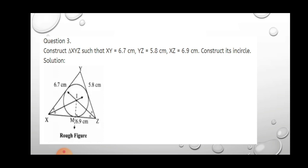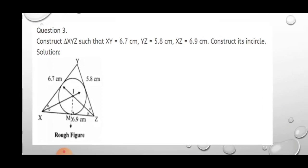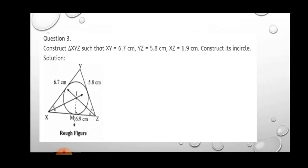On screen, a rough figure is drawn. First, decide which side is the base. Here the base XZ is 6.9 cm, so draw that with pencil and scale. To draw XY and YZ, use a compass. Draw the rough figure first — it carries one mark. Then follow the steps to construction shown on the next screen.